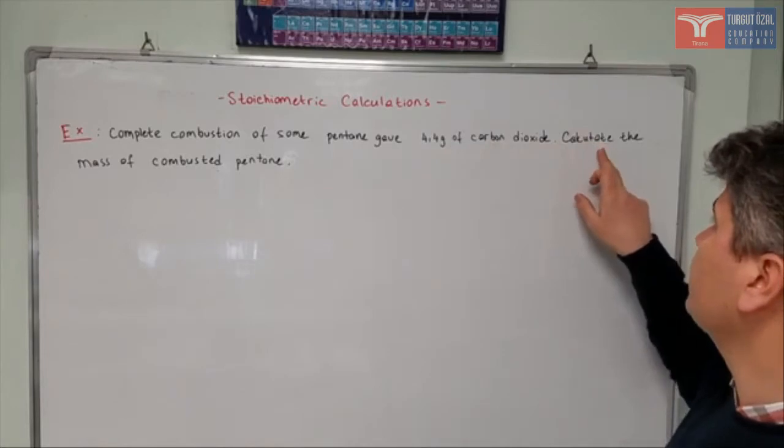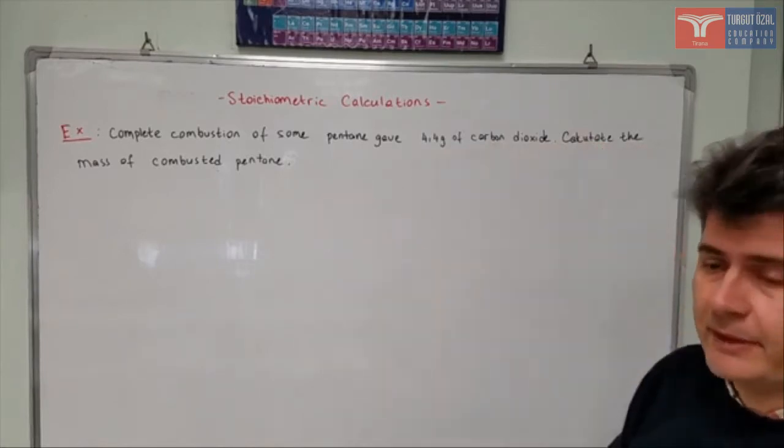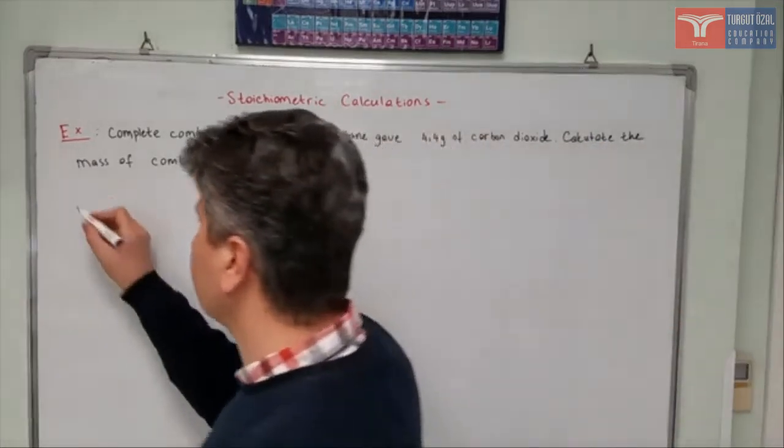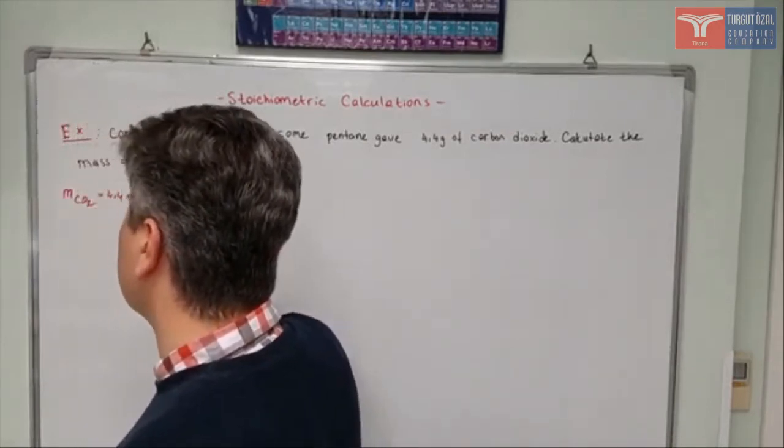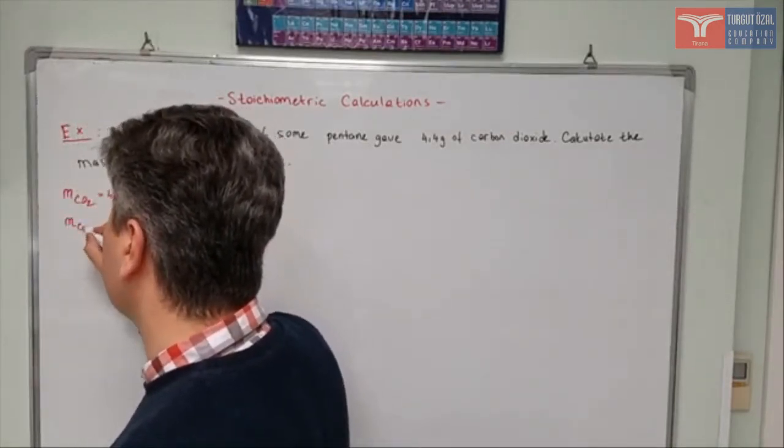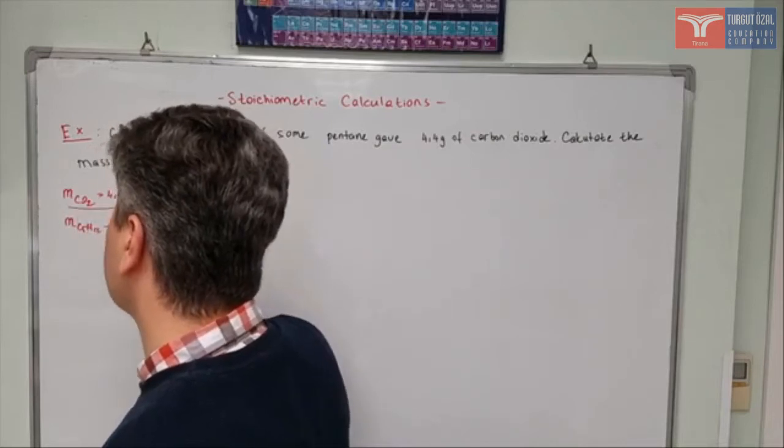It's asking me to calculate the mass of combustible pentane. So I know the mass of carbon dioxide to be 4.4 grams, and I need to find the mass of C5H12.